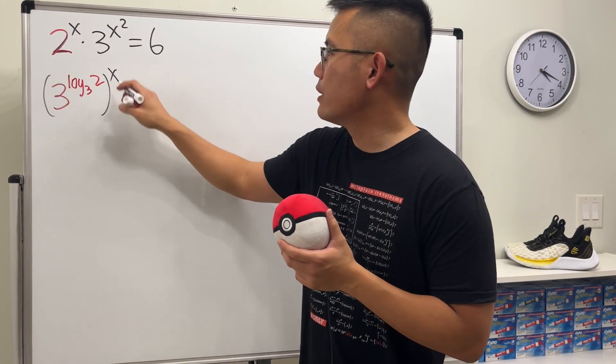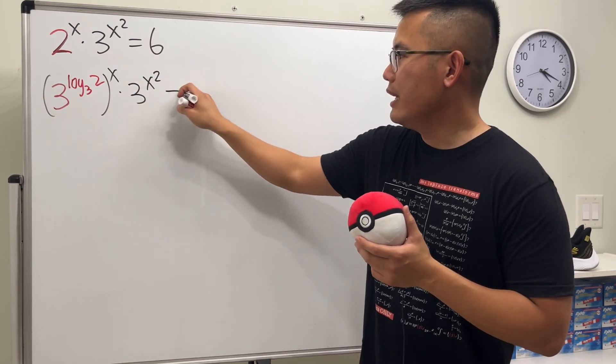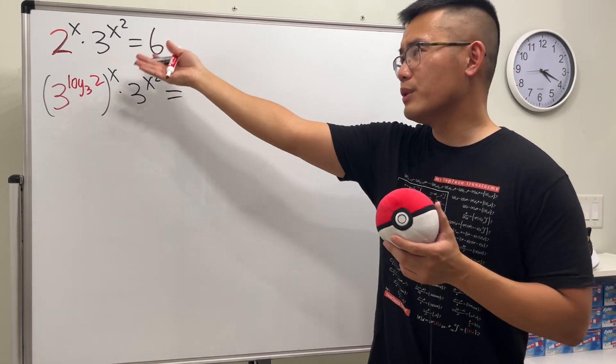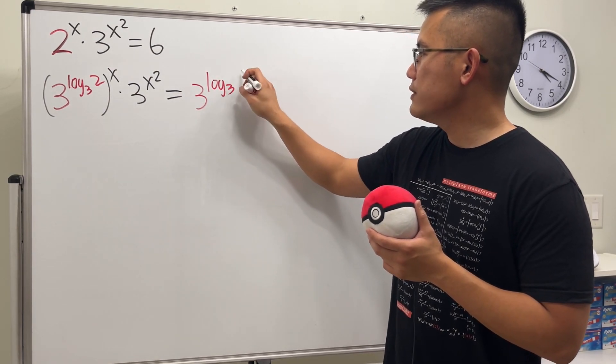Very good. And then we'll take this raised to the x power and then times 3 to the x squared power and that equals 6. But let's do the same thing for the 6, which is 3 to the log base 3 of 6.